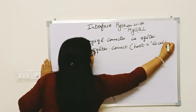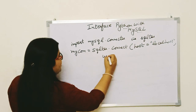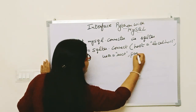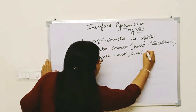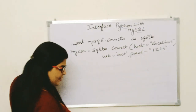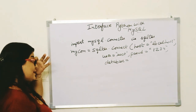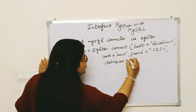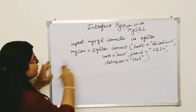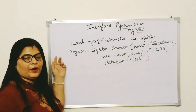The host is always 'localhost', and the user is always 'root'. The thing that changes is the password only. So you write your password — for example mine is 1234, but you write whatever yours is. Then for the database parameter, you write the name of the database you want to connect to, for example 'test'. That completes the second part.